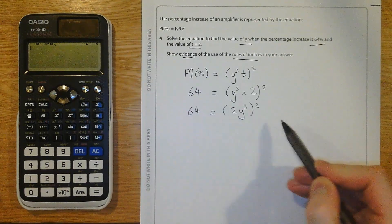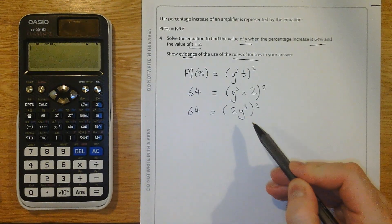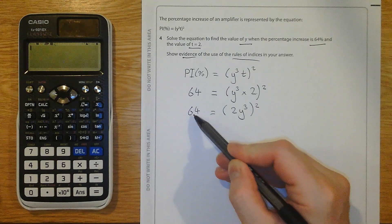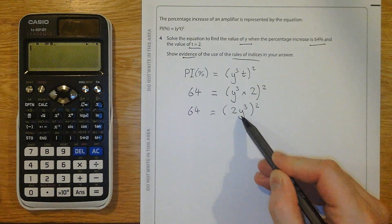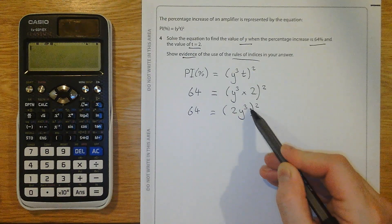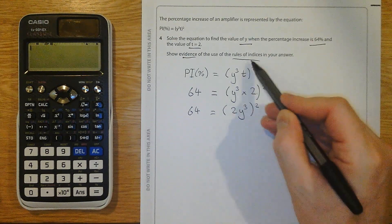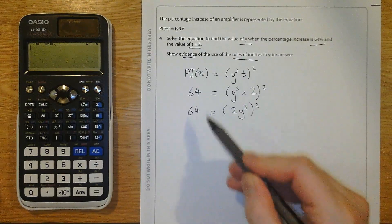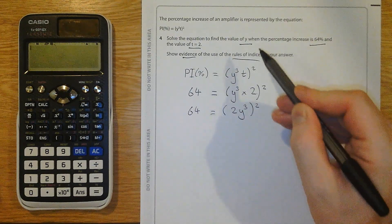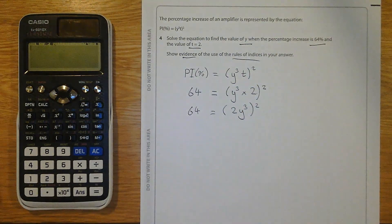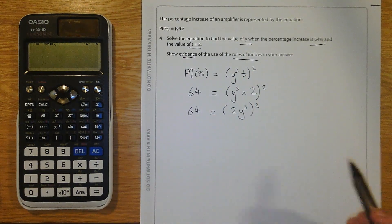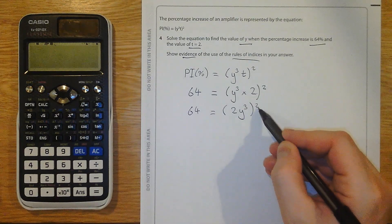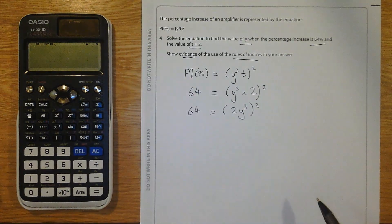Now, the first thought I had was, well, this is being squared, and this is a square number. So I could just square root both sides. Then I would get, well, the square root of 64 is 8. So I'd get 8 equals 2y cubed. But then where am I going to show any index rules? That might be a valid way of doing it, but it might not show what they want me to. So instead, since I'm looking to demonstrate the rules of indices, I'm going to make this 2 apply to what's inside the brackets.